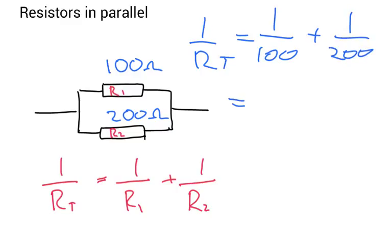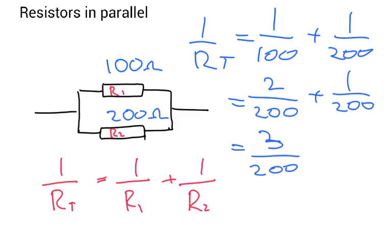Which is equal to 2 over 200 plus 1 over 200. Add these all up together and we get 3 over 200. So RT is equal to 200 divided by 3.